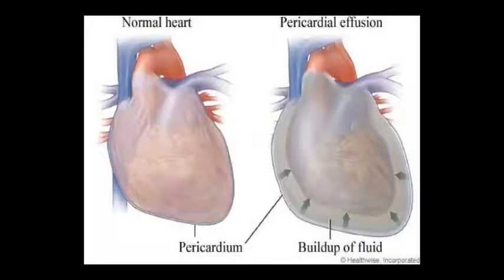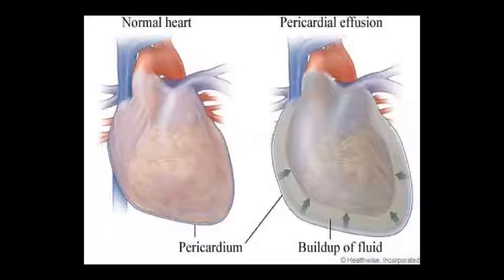This is a normal heart shown in the first diagram with the pericardial layer. In the second diagram, fluid has built up, and this is called pericardial effusion, which compresses the heart.